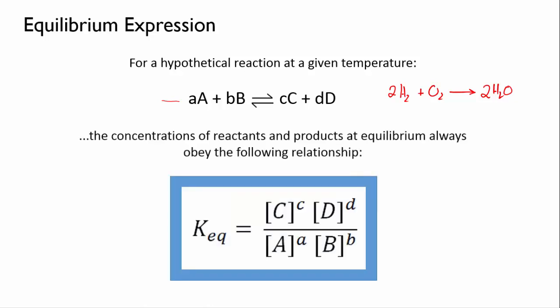So for our hypothetical reaction, when it comes to equilibrium, we can say that the concentrations of the reactants and products will always obey this relationship. When a chemical formula is put inside a square bracket, the square brackets mean the concentration of that chemical. So this is the expression.